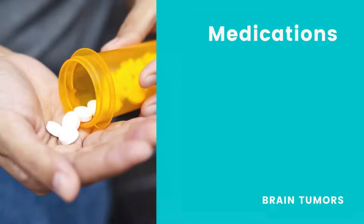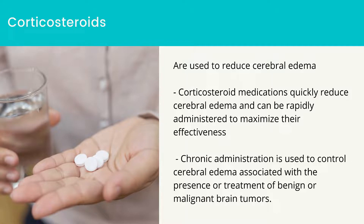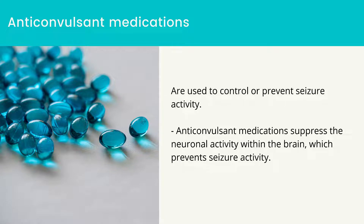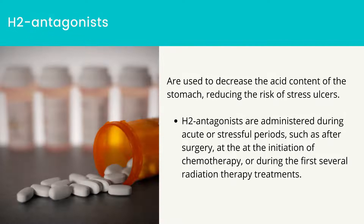Medications: Non-opioid analgesics are used to treat headaches; opioid medications are avoided because they tend to decrease the level of consciousness. Corticosteroids are used to reduce cerebral edema, relieving headaches and improving altered levels of consciousness. Corticosteroid medications can be rapidly administered to maximize their effectiveness. Chronic administration is used to control cerebral edema associated with the presence or treatment of benign or malignant brain tumors. Osmotic diuretics decrease the fluid content of the brain, resulting in a decrease in intracranial pressure. H2 antagonists are used to decrease the acid content of the stomach, reducing the risk of stress ulcers, and are administered during acute or stressful periods.